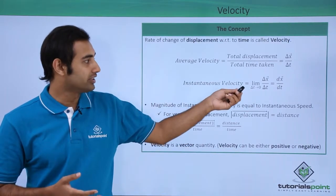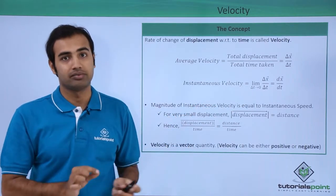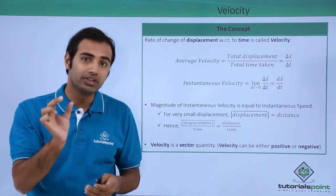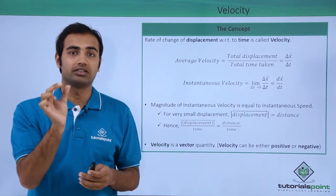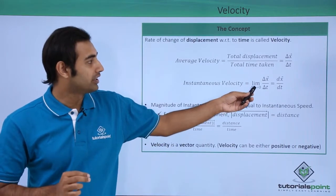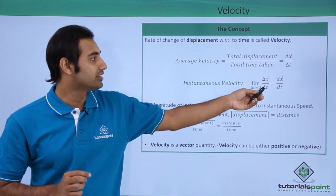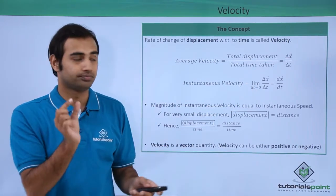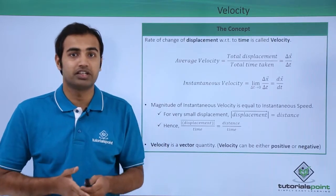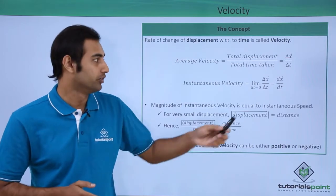Instantaneous velocity is defined in the limiting situation when our time interval is extremely small. The formula for instantaneous velocity is the same as average, only the time interval is decreased to an infinitesimally small value. So when I apply the limit delta t tending to 0 on this expression, what I am essentially doing is decreasing this time period to almost 0. In that situation the object won't have enough time to travel the displacement, and clearly the displacement will also decrease to a very very small value.